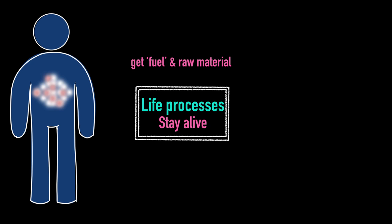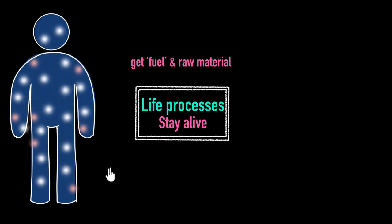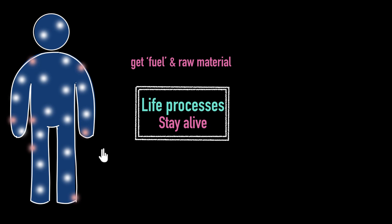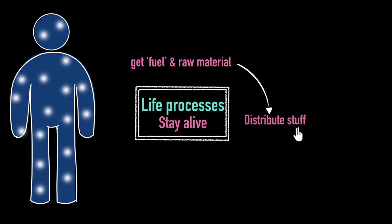Most of the stuff I've eaten gets absorbed by the intestine, but what about the rest of the parts of my body? My hands and my legs also need the fuel and raw materials. So I need to distribute all that stuff to the different parts of the body, so that all parts can absorb the raw material, use it to build muscles, and help me grow. If I'm not able to do that, most of the cells in my body will die and I will not be able to stay alive.